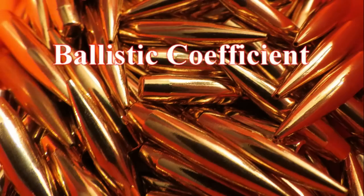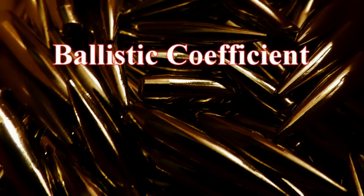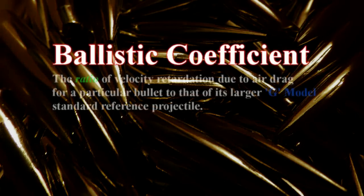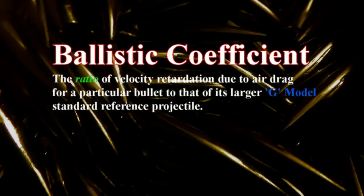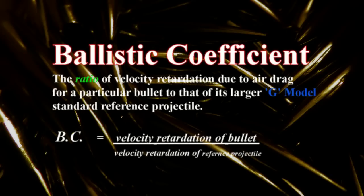So what exactly is a ballistic coefficient and how do we mathematically get that value? Simply put, a ballistic coefficient is just a ratio — the ratio of velocity retardation due to air drag for a particular bullet against that of a larger G model standard reference projectile. It's how the bullet you're looking at performs next to the standard reference projectile. That's where this G1 and G7 language comes into play — those are referring to reference projectiles and the drag functions that were derived from them.